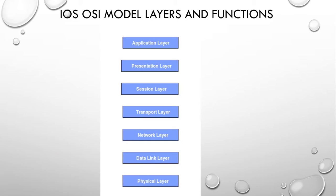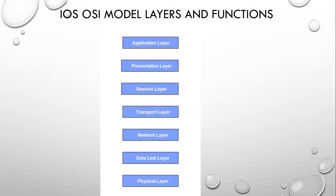Next, we'll move on to OSI model layers and functions. There are mainly seven layers in the OSI model: physical layer, data link layer, network layer, transport layer, session layer, presentation layer, and finally the application layer.